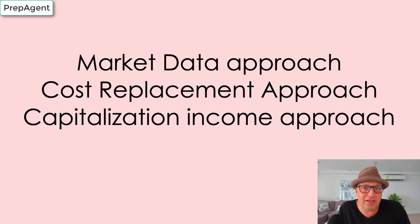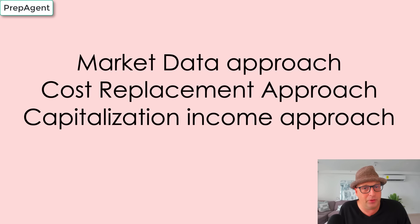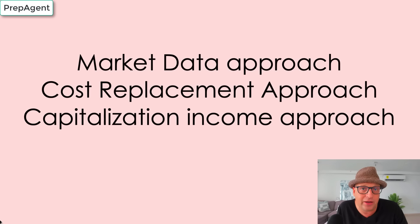The capitalization income approach asks: how much does the income of that property contribute to its value? In the cost replacement approach, those buildings don't have income and there are no comps, so you just see how much it would cost to replace it brand new. But with the capitalization income approach, there is some income, and if that building draws a lot of income, obviously it has more value — and that's what this approach calculates.